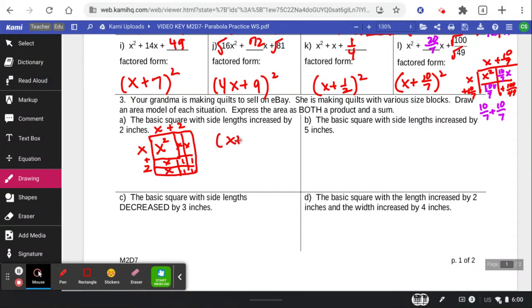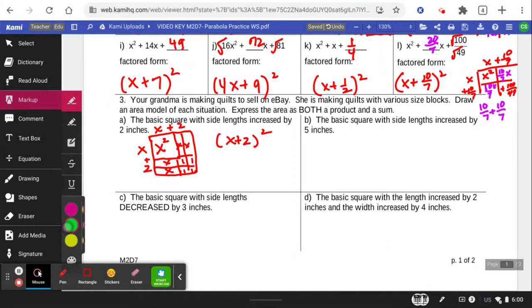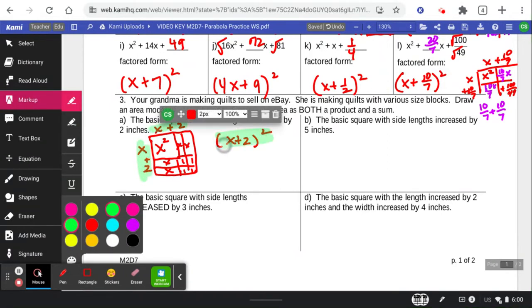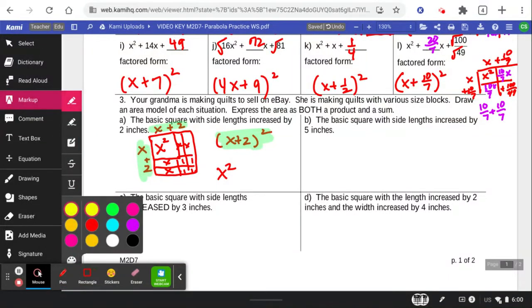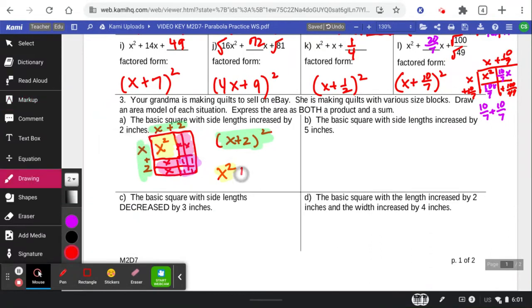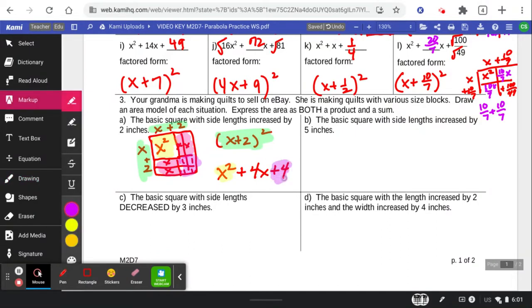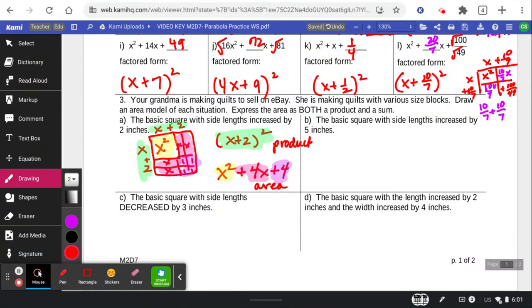And then we write the product. The x plus 2 squared comes from these over here. And then we write the sum. And show all of where the different parts come from.